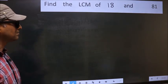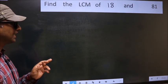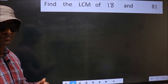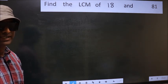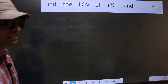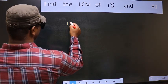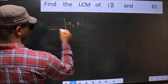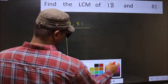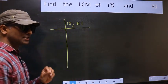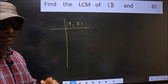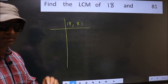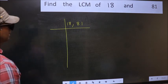Find the LCM of 18 and 81. To find the LCM, we should frame it in this way: write 18 comma 81. This is your step one. Now you should focus on the first number, which is 18.